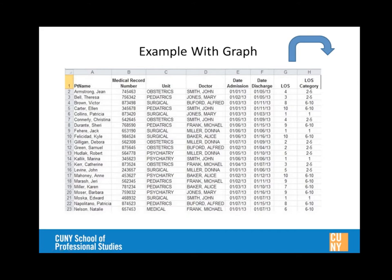The length of stay in column G is being translated to a length of stay category in column H using the IF formula. The formula looks like a bunch of gibberish at first, but Mike will break it apart and show how to use it so you too can create this length of stay categorization. It looks complex, but it really makes a lot of sense once broken down.